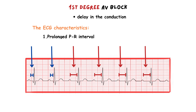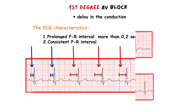Therefore, we expect the duration of the PR interval to increase. A PR interval duration of more than 0.2 seconds indicates first degree block. Another characteristic is that the delay in the conduction is consistent, so each PR interval will be equal.